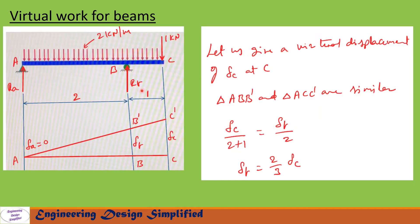First, let us find the reaction at B. To do so, let us give a virtual displacement of delta-C at C. The beam will assume the position A, B-prime, and C-prime. Displacement at C is delta-C, at B is delta-B, and at A, delta-A equals zero. We have two similar triangles — A-B-B-prime and A-C-C-prime — from which we can write delta-C over three equals delta-B over two.